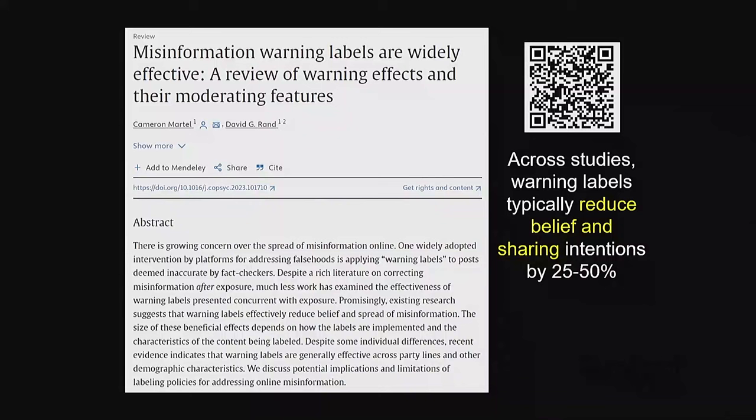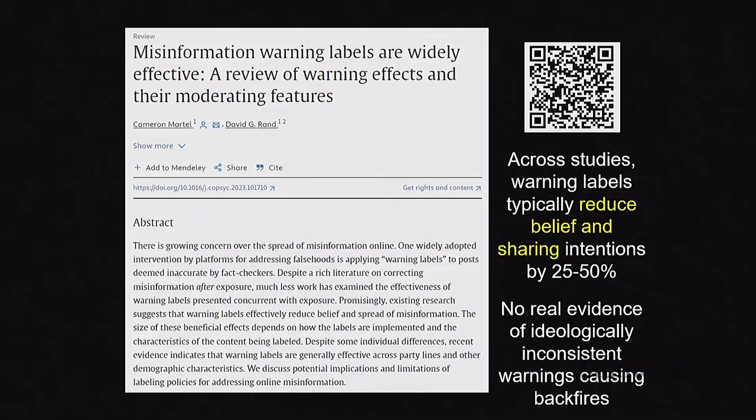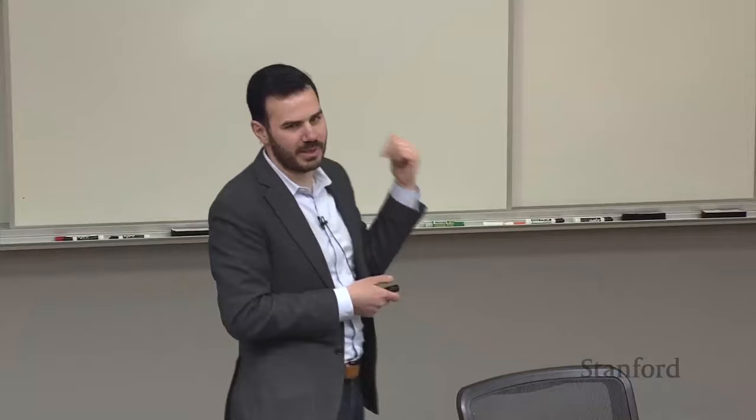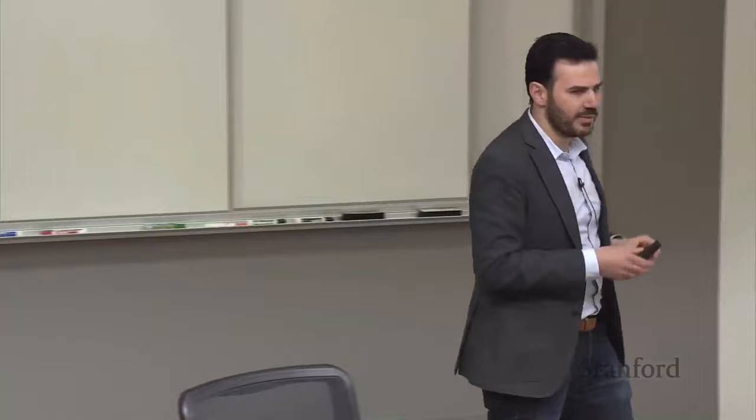Actually, there's a lot of evidence that fact-checker warning labels work. If you put a label on something saying it's false, people are less likely to believe it and less likely to share it. Across studies we find maybe a 25 to 50 percent reduction in belief and sharing if you put a label on it. And there's basically no evidence of backfire — warnings are good.